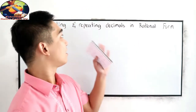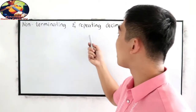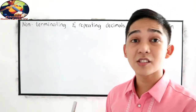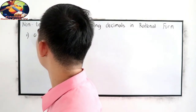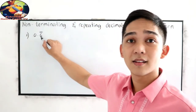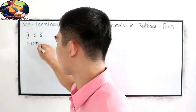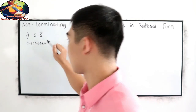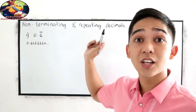In this video, we will be discussing how to write non-terminating and repeating decimals into rational form. Our first example is 0.6 bar, which is equivalent to 0.666666 and so on. How are we going to write 0.6 bar into rational form?